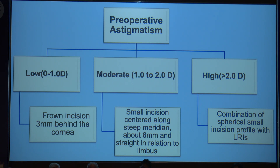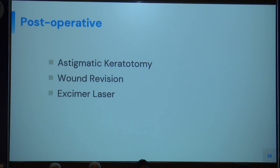For low astigmatism, a frown incision 3 mm behind the cornea at the superior temporal site is used. For moderate astigmatism of 1 to 2 diopters, a small incision centered along the steeper meridian of about 6 mm is used — the straighter the incision, the more astigmatism will be corrected. For high astigmatism, a combination of small incision profile and limbal relaxing incision is used. Post-operatively, if astigmatism persists, options include astigmatic keratotomy, wound revision, or excimer laser.